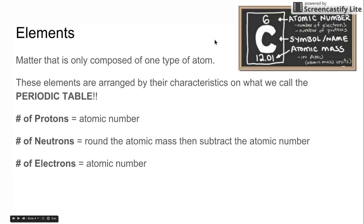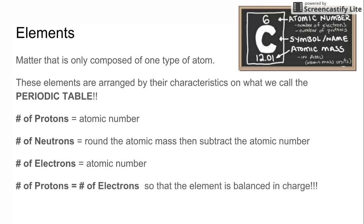And then the last thing is that in any stable element, the number of protons equals the number of electrons. So the number of electrons is also that atomic number. The number of protons equals the number of electrons so that the element is balanced in charge, in that there is the same amount of positive as there is negative.